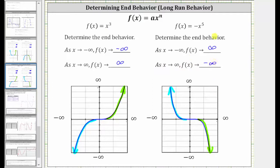Notice how both of these power functions have an odd degree. For f(x) = x³, a is one or positive, and for f(x) = -x⁵, a is negative one or negative. Whenever we have a power function with an odd degree and a is positive, this will always be the end behavior, and when the degree is odd and a is negative, this will always be the end behavior.